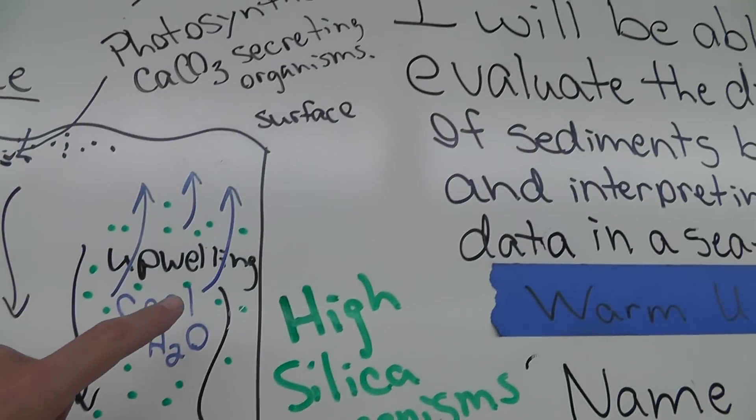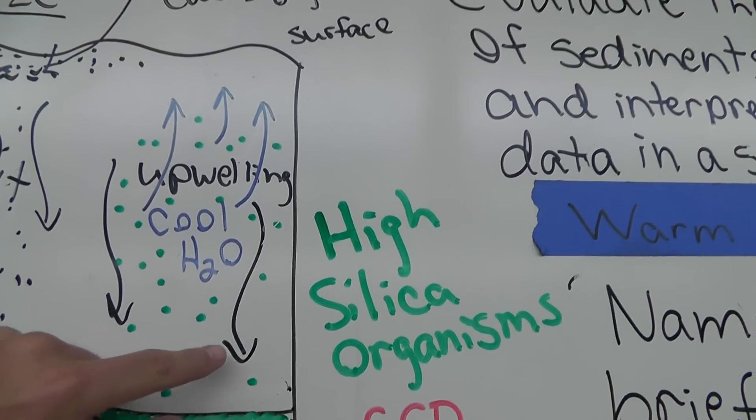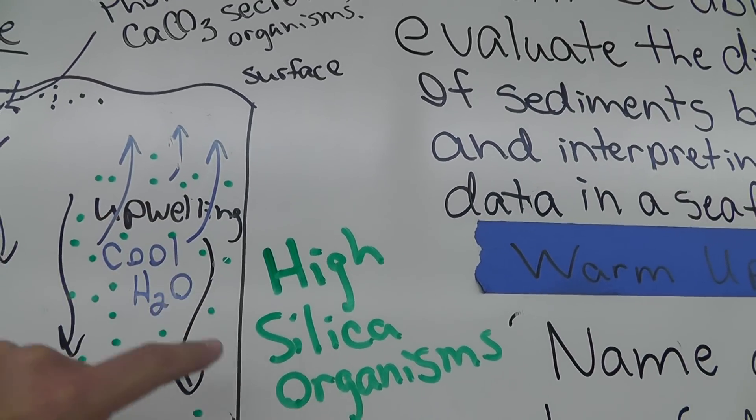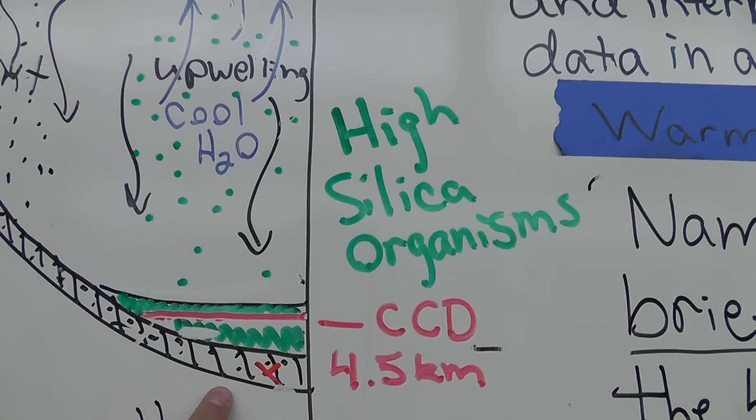that are in this cool place because remember silica organisms like cool water. So in an area of upwelling where we have this cold bottom water right here that upwells and goes to the surface we're going to have a lot of silica organisms. So these ones right here are encased in the silica.